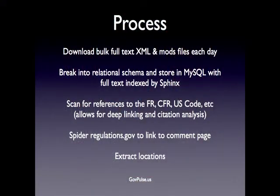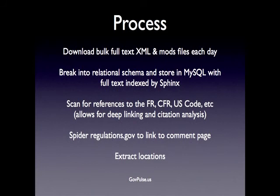Our daily process is to download the bulk text and XML each day, then process them and insert them into our database. Right now the GPO provides two primary different ways of sending us this information — the raw metadata and the full text — and we have to merge those two together. We then scan for references to a variety of different sources: the Federal Register, CFR, U.S. Code, and hyperlink those to the particular section in the associated document. We also use this to do citation analysis of the Federal Register itself to get a sense of what's the most cited article in the last year by a given agency. This is likely to be important. When viewing a proposed rule, you can see the final rules based on it because it refers back via citation. We do the reverse citation as well.